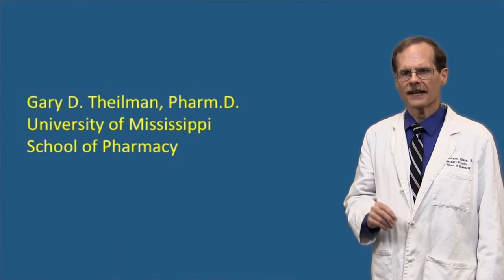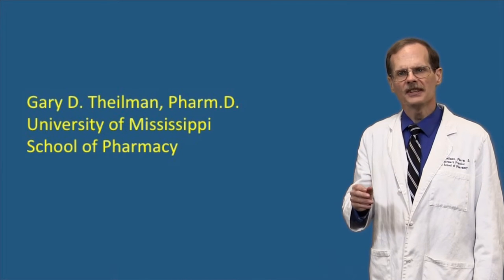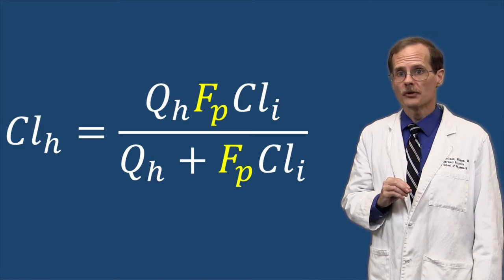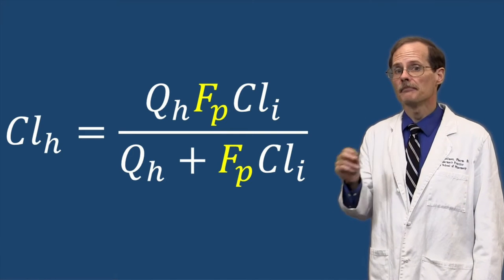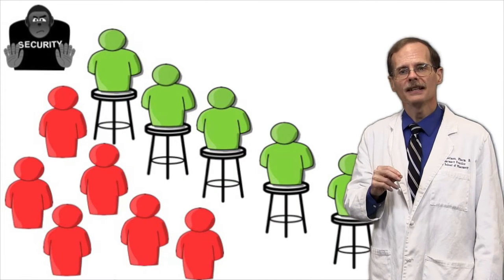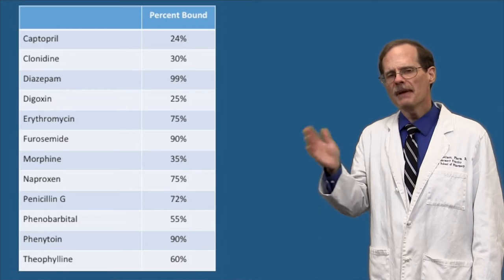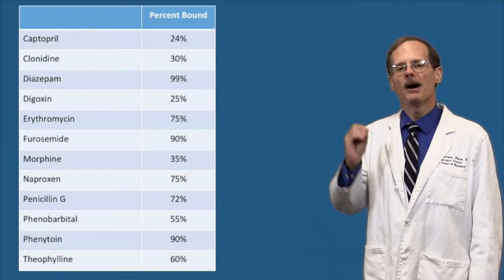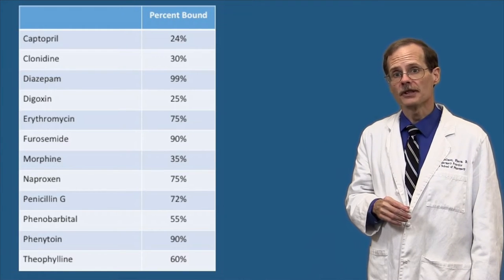Let's look into more factors that affect how quickly the liver can clear drug from the body using the well-stirred model. This time we're going to look at protein binding. In the equation it's represented by F sub P. In our analogy, protein binding is determined by the number of bar stools available. Many drug molecules, to a greater or lesser extent, bind to plasma proteins like albumin and alpha-1-acid glycoprotein.